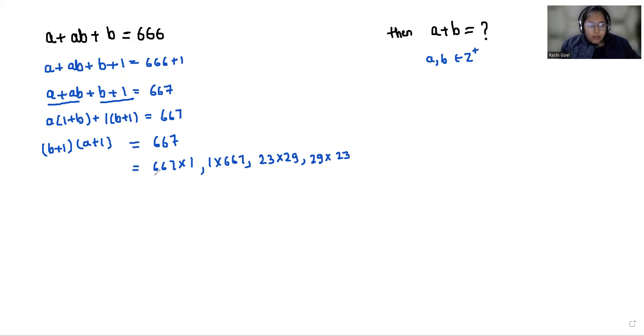Now if B plus 1 equals 1, then B will be 0. That is not possible, so we reject these two cases and we'll take these two cases.